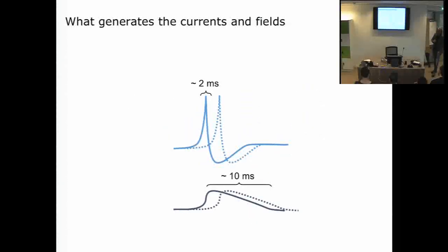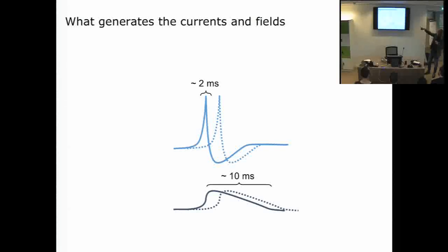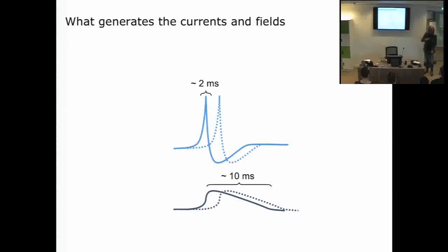There are constraints on what we can see. Action potentials are very short-lived: if they're not perfectly synchronized, the depolarization and repolarization cancel out at a microscopic level. So with EEG and MEG, we're not really measuring action potentials. We're measuring the effect they have on postsynaptic neurons, because those effects are long-lived and uniphasic — so they add up.